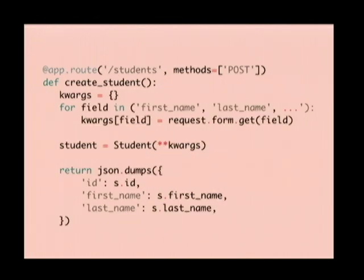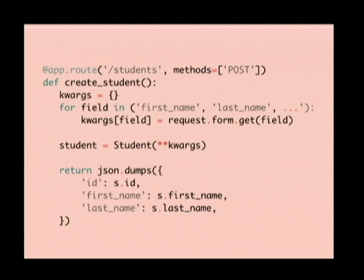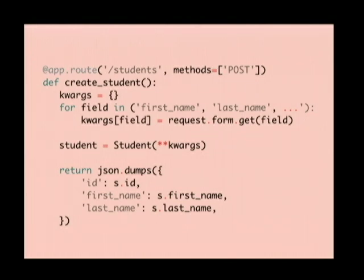Moving on, we have another example view of how we'd create a student. We'd route this to the same list, except now we're using the POST method. It gives us a little more work to do because now we're dealing with input. We're going to go through our list of fields that we want to let people pass to us when they're creating a student — things like first name, last name, et cetera — and for each one, we're going to build a dictionary of the args we're going to use to create our student object by pulling it off of the request form. This is old school — it's using just the HTTP form body. If we had a JSON or XML body, we'd replace request.form with request.json and it would work just as well.